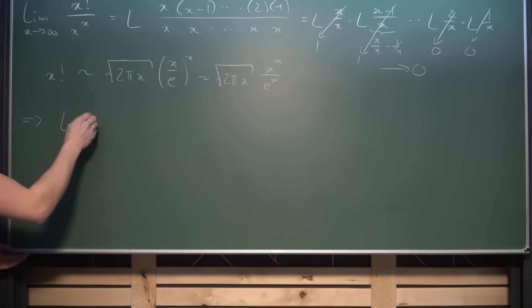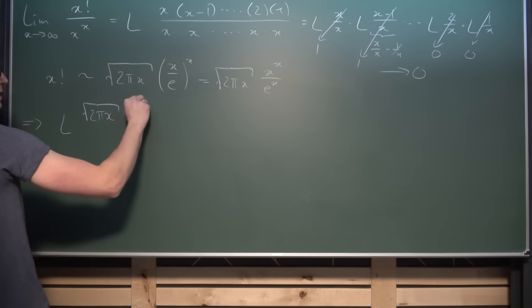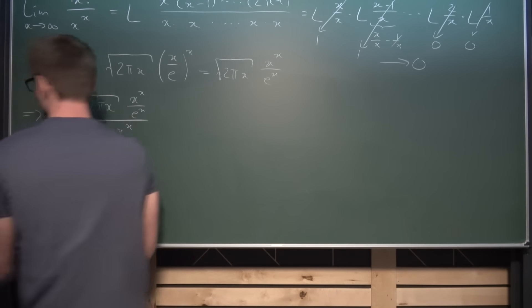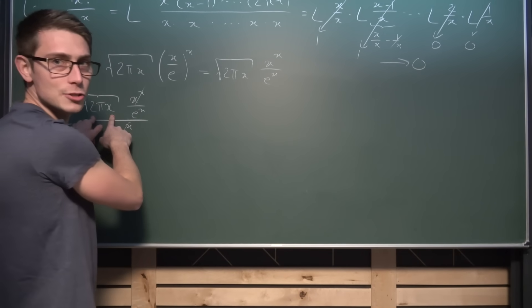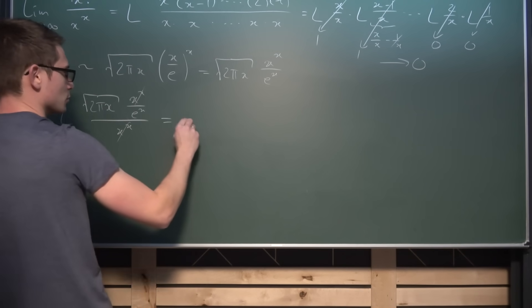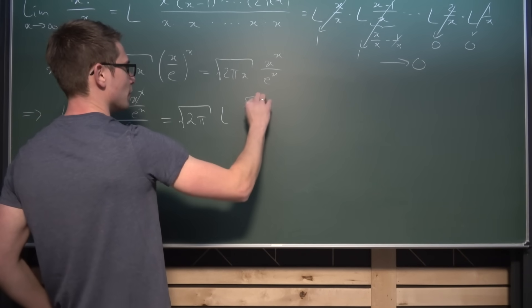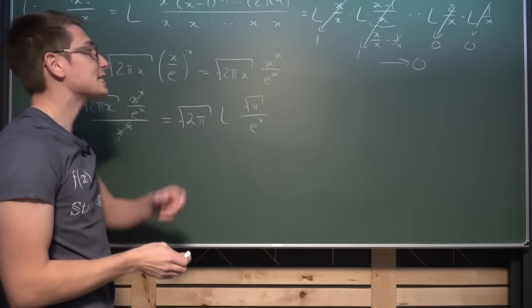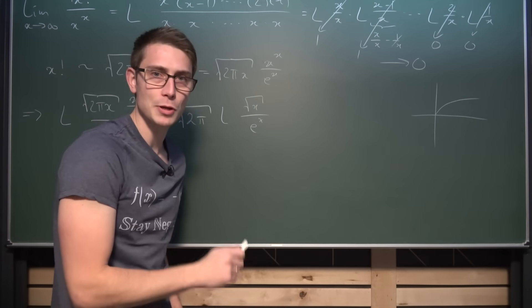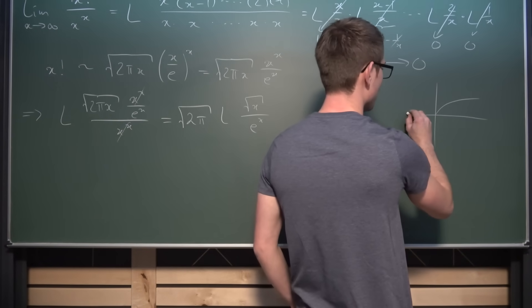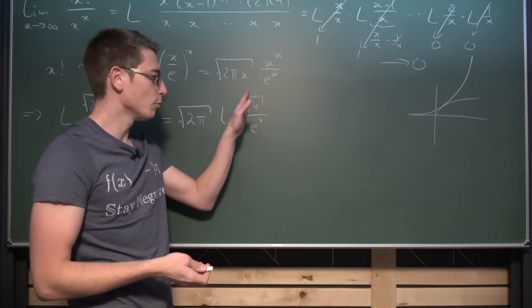We can plug this in because they are asymptotically equal as x→∞. Our limit turns into the limit as x→∞ of √(2πx) · x^x / e^x, all divided by x^x. The x^x cancels out. We can factor out √(2π) as independent of the limit, leaving us with the limit as x→∞ of √x / e^x. Obviously e^x grows so much faster than √x — it's a fast-growing function — meaning it overtakes everything and the limit goes to zero.